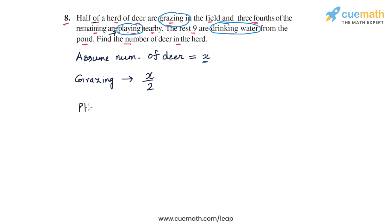Now the next category is deer who are playing. So how many deer are playing? The problem statement says that three-fourths of the remaining are playing. So x by 2 are grazing. The remaining will also be x by 2 because the total herd has a strength of x. If you take out x by 2 from x, you get x by 2 again.